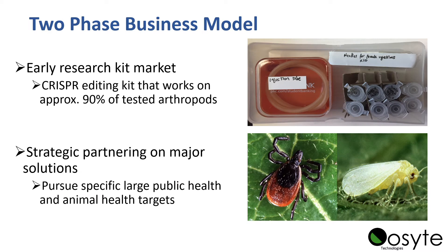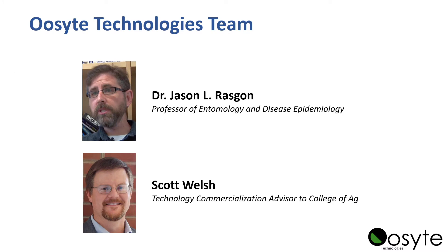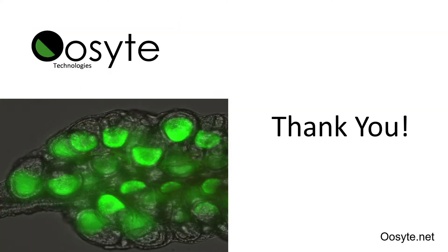We have a two-phase business model. First, marketing a kit — we have a ligand that works in 90% of all arthropods, and we can design specific ligands for pretty much any target. For the second phase, strategic partnering with corporations to target specific applications in animal health and public health. Our team includes myself on the science side and Scott Welsh on the business side.